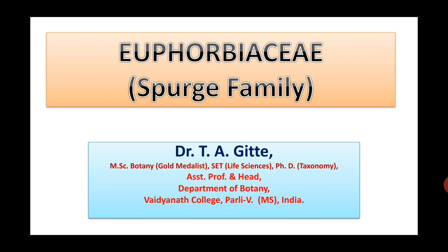Family Euphorbiaceae belongs to subclass Monochlamideae or Apetalae and series Unisexuales. Key diagnostic characters of this family are: herbs, shrubs or small trees; milky latex present; flowers apetalous or unisexual; female flowers usually tricarpellary and ovary trilocular; and fruit type is capsule or regma.